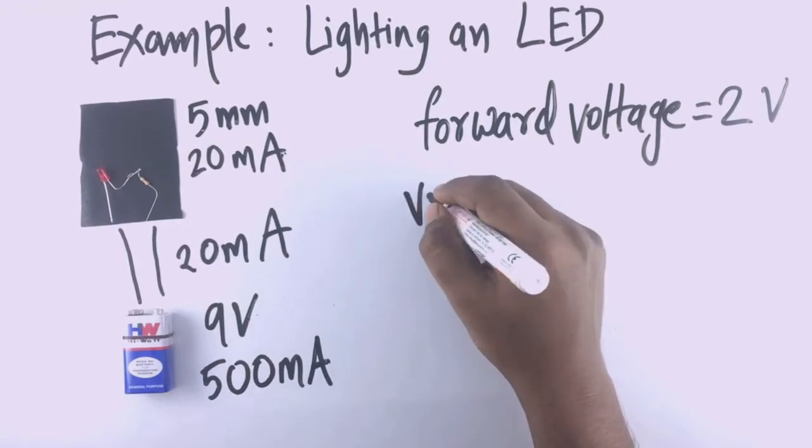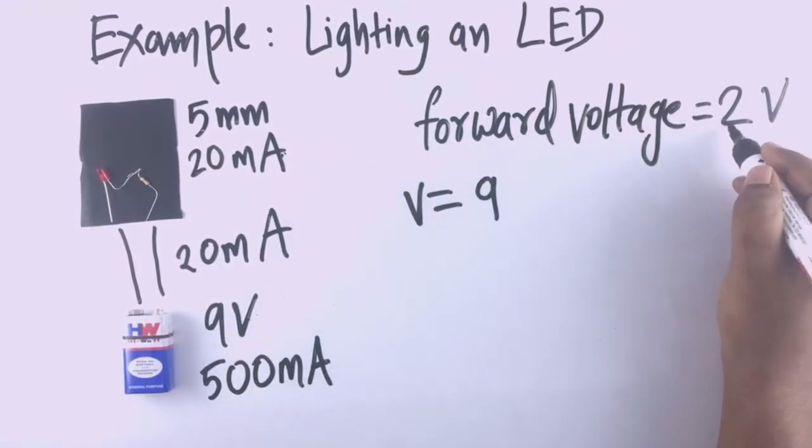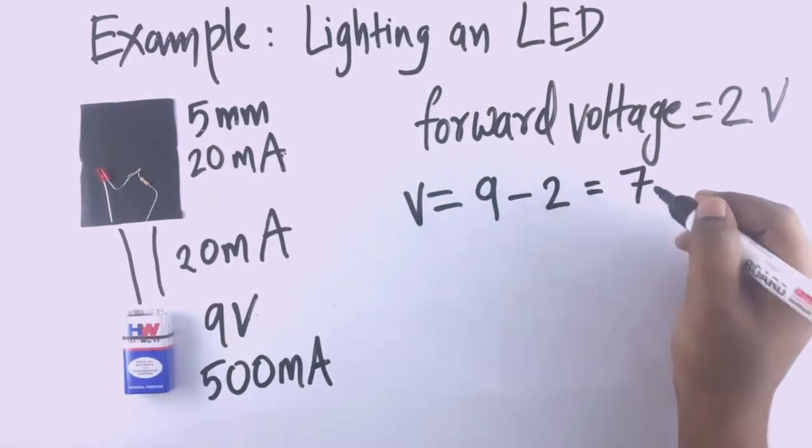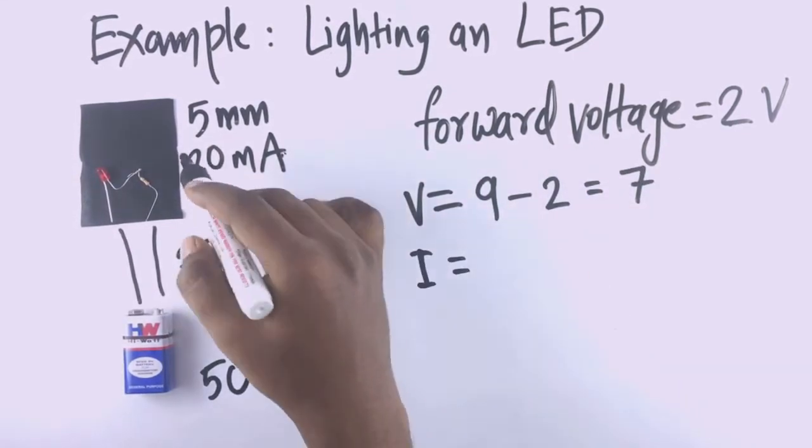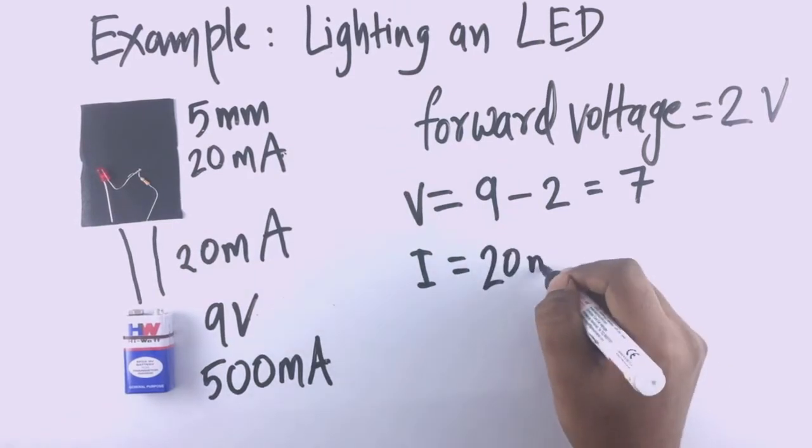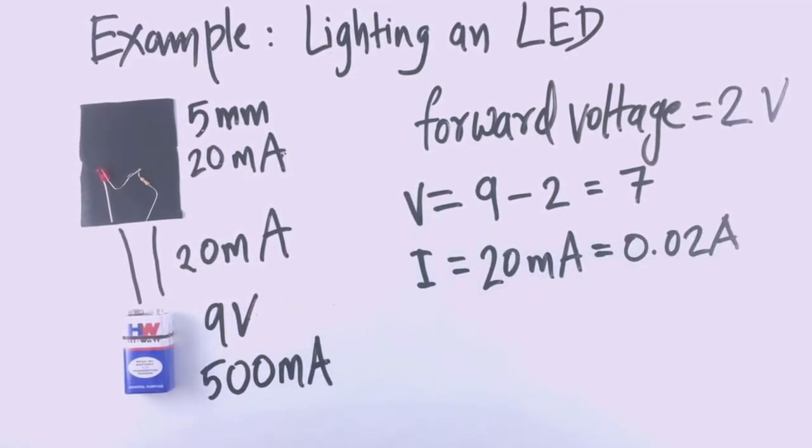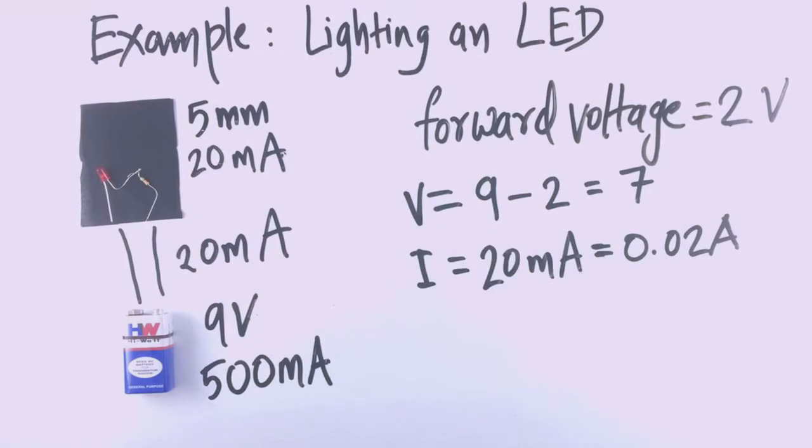V or voltage is 9V from the battery minus the 2V from the forward voltage of LED. I is the current we need, so it's 20mA, which is 0.02A. Now if you do the math, you will get the resistance.